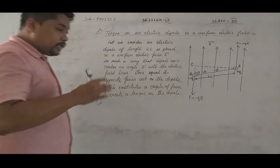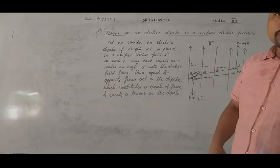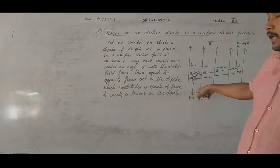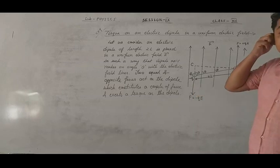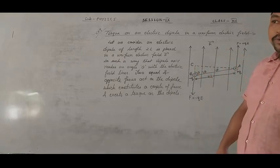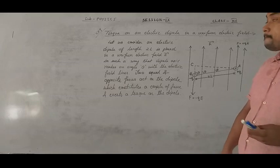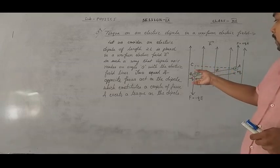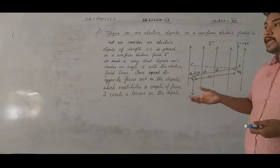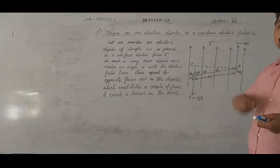This is the uniform electric field. This is the dipole placed. The whole field direction gives plus qE and the field in the opposite direction gives minus qE. You can see the two equal and opposite forces. This is the torque produced. According to the definition of torque, torque is either force into perpendicular distance between the forces, and the perpendicular distance between the forces is AC.